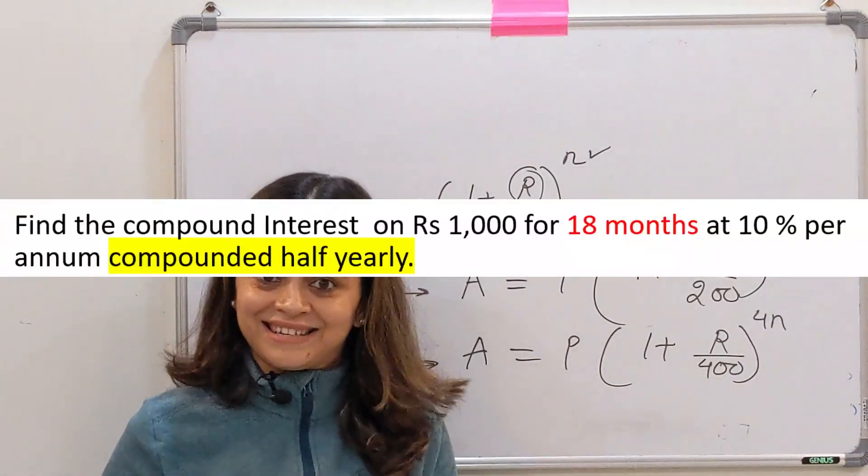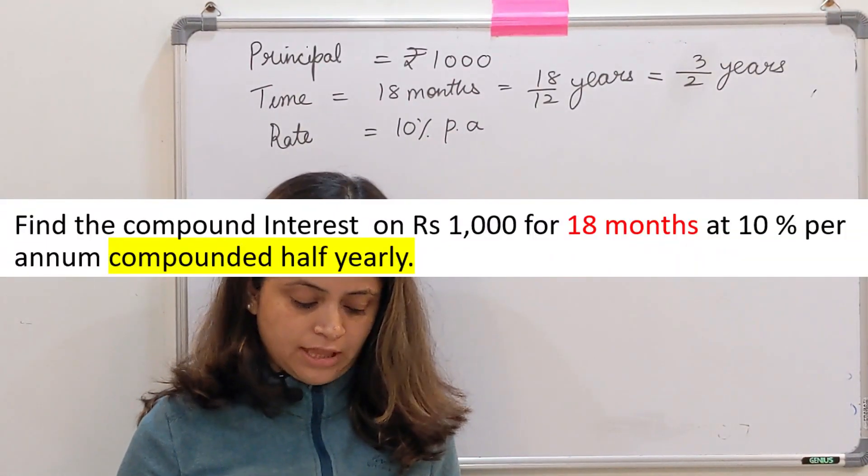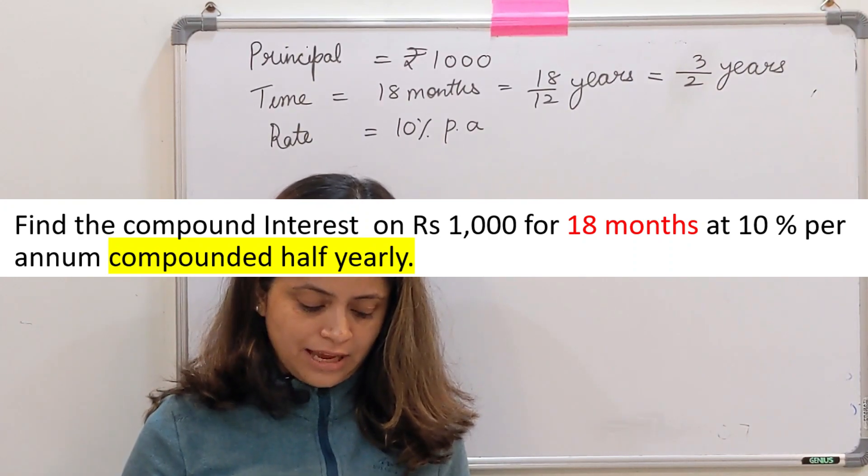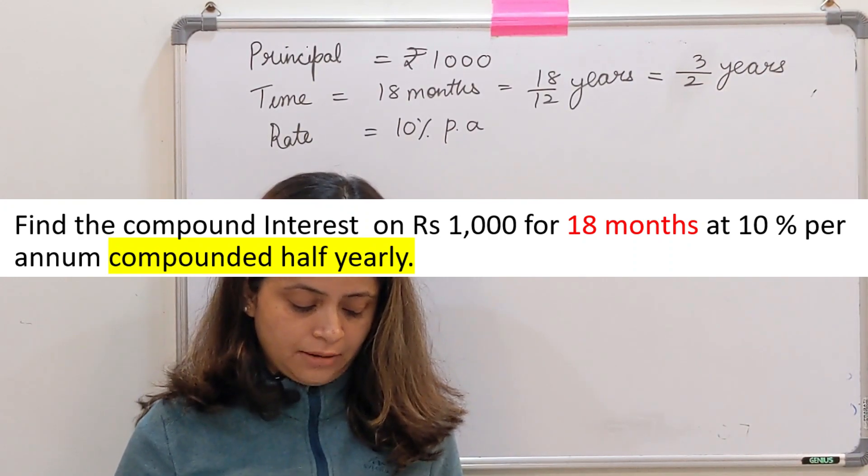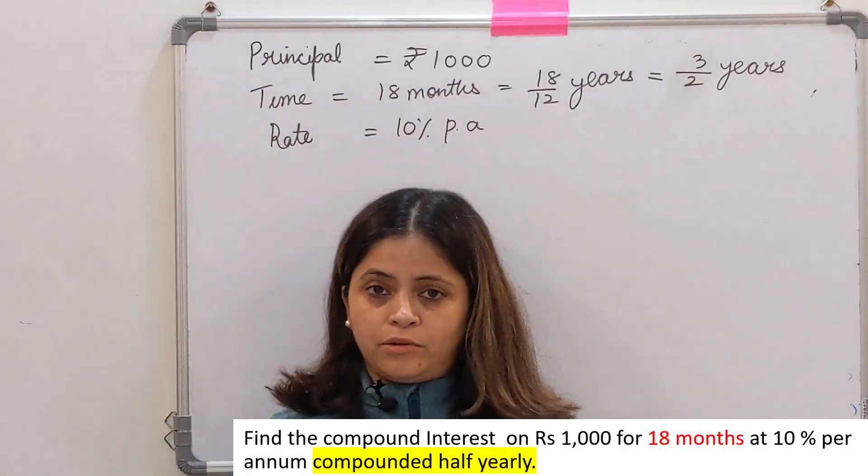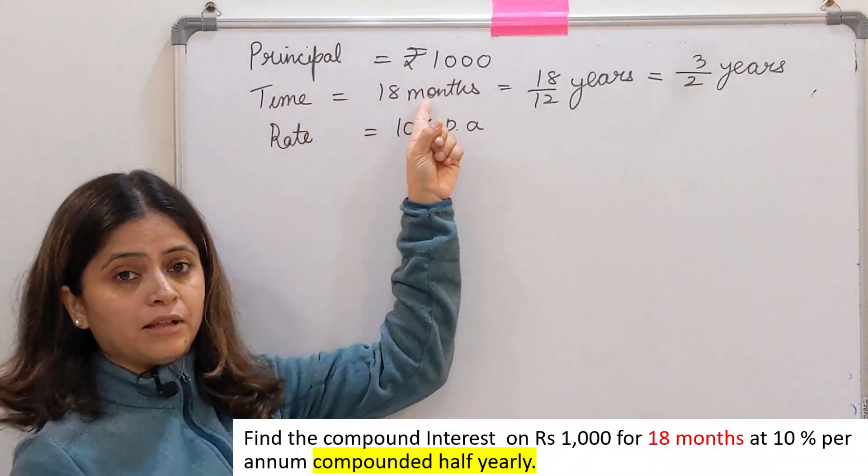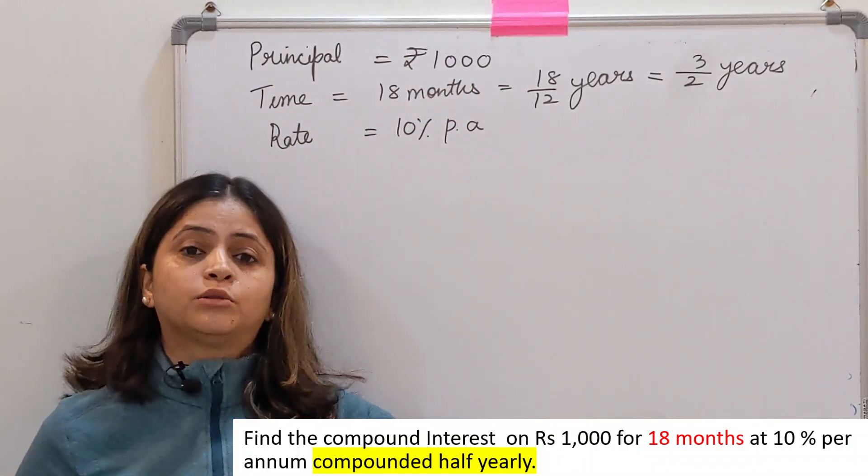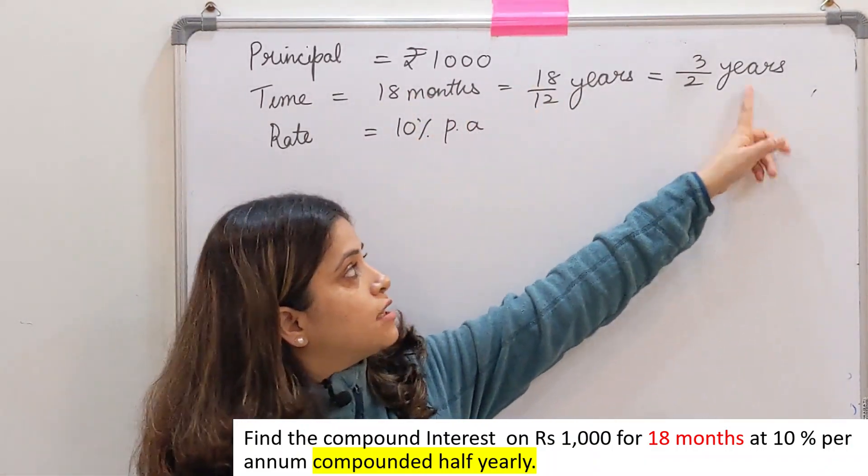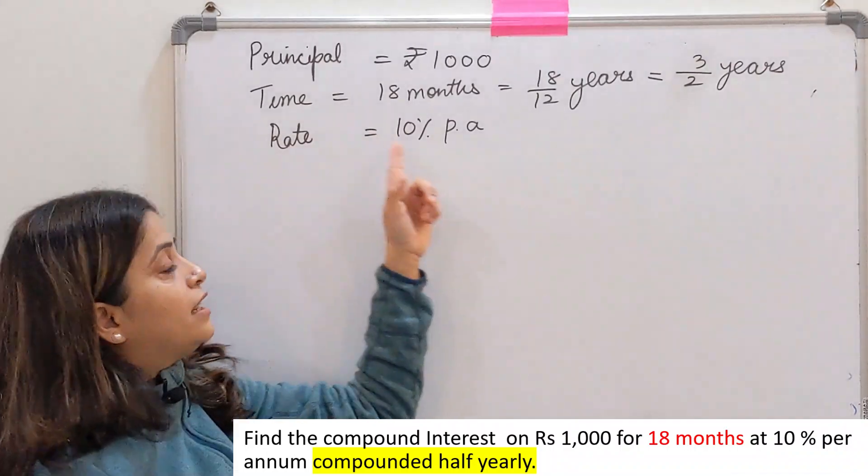So let's start. The question says: Find the compound interest on rupees 1000 for 18 months at 10% per annum compounded half-yearly. So here we have to find the compound interest where the principle is given as 1000, time is 18 months. As I told you, months में होगा ना तो इसको years में convert करो. This is the way: divided by 12. Lowest formula आएगी, 3 by 2 years बन जाएगा. Rate is already given as 10% per annum, right?